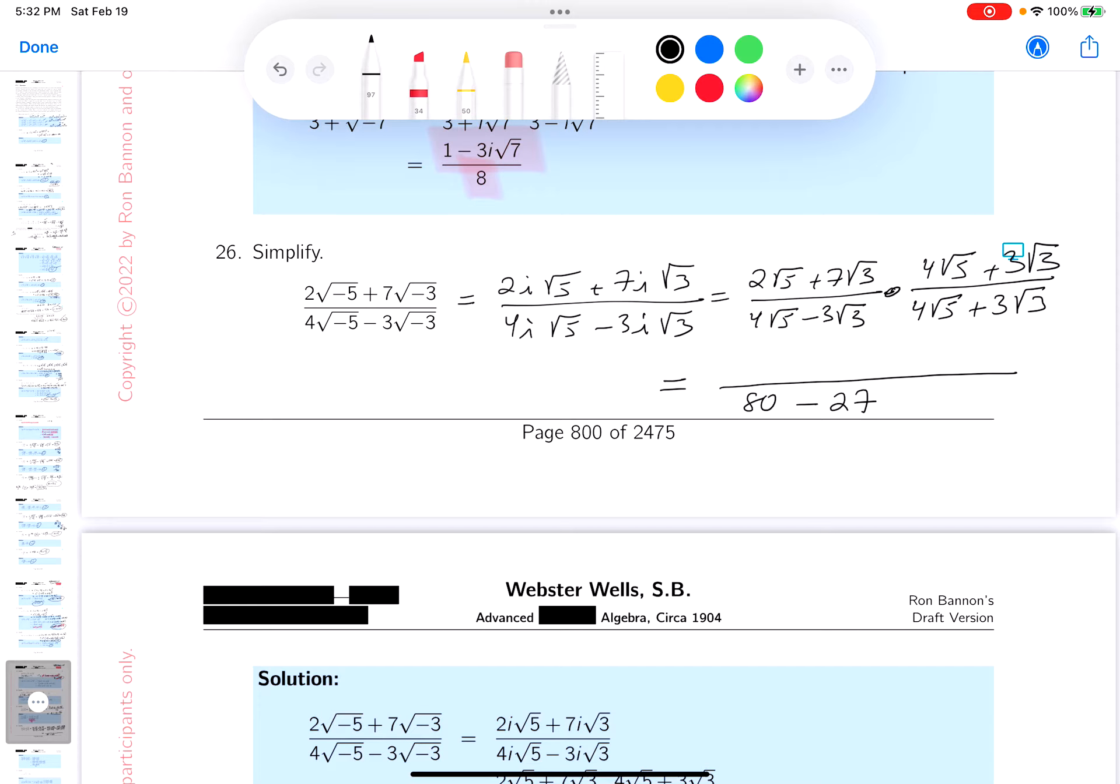I'm going to do the top now. The top's going to be 8 times 5, which is 40. I'm distributing this across those two terms. And again, 2 times 4 is 8. Root 5 times root 5 is 5. And 5 times 8 is 40. What's the next one going to be? Plus 6 root 15. Then I'm going to get 28 root 15. And then I'm going to get 21 times 3, which is going to be 63.